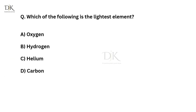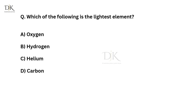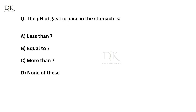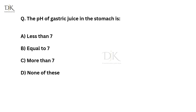Which of the following is the lightest element? The right answer is hydrogen. The pH of gastric juice in the stomach is? The right answer is less than 7.